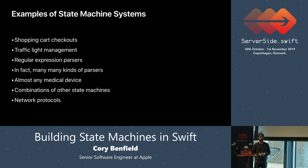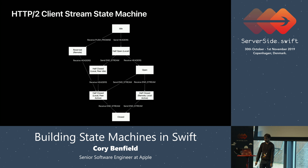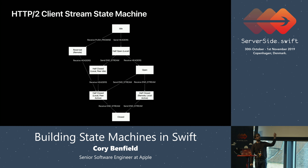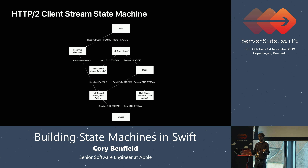Almost every network protocol you've heard of involves a finite state machine. As an example, I'm going to use HTTP/2. This much more complicated diagram is a representation of the HTTP/2 stream state machine for the client side, extracted directly from Swift NIO. HTTP/2's RFC has a diagram that says: this is the state machine diagram for the client side of a stream. If you go look up RFC 7540, you will see that it looks almost entirely unlike this diagram.